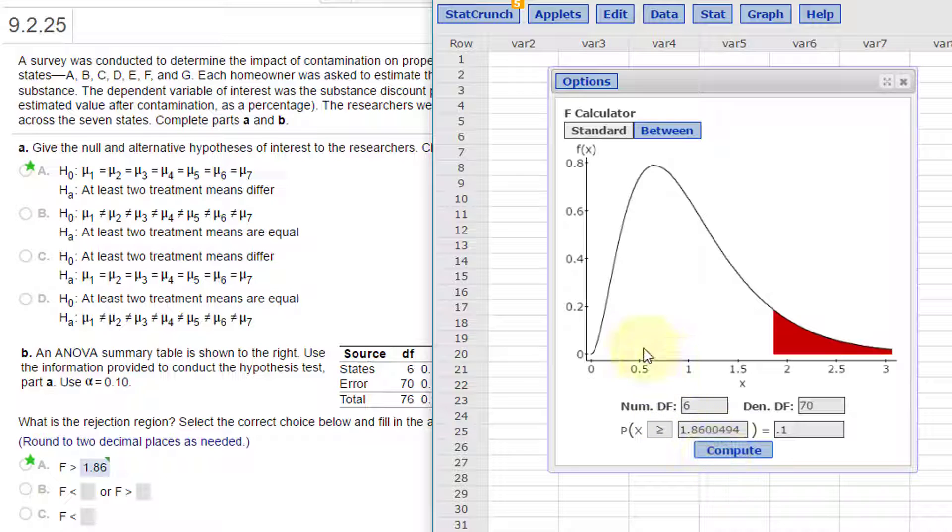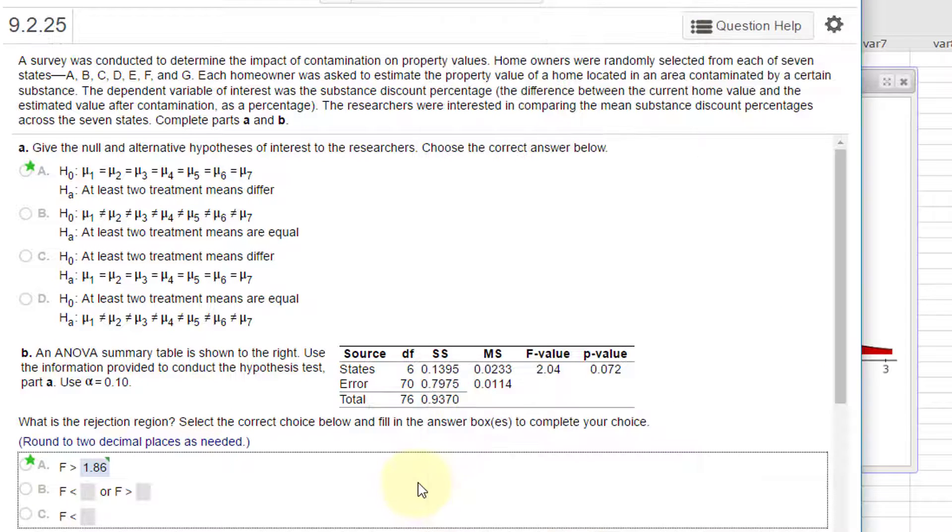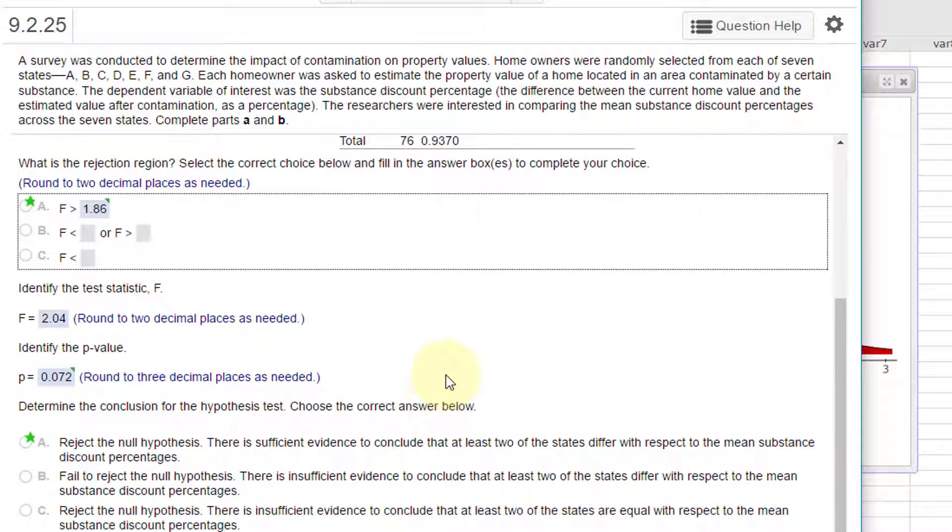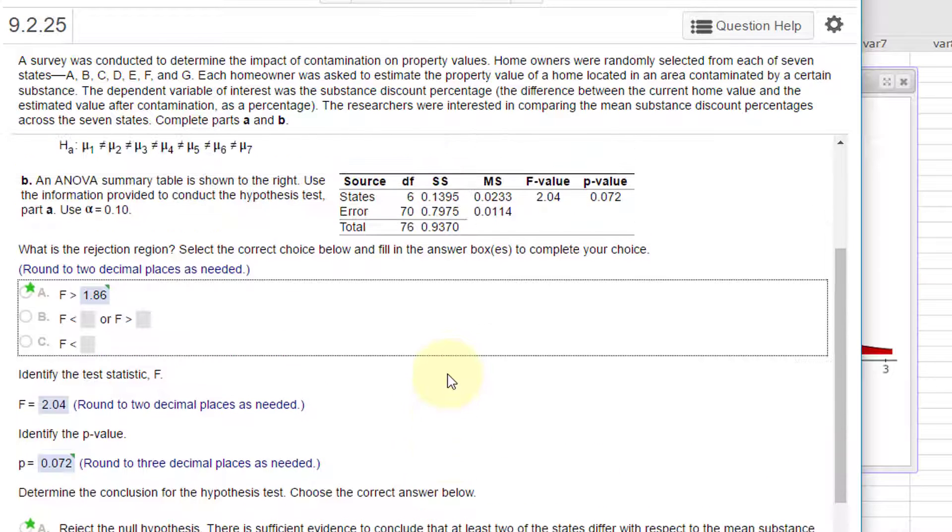Greater than 1.86 - so that's that part of the answer. Again, on this one they've already worked it for us. What's the F statistic? It's given right there: 2.04. That gives us the p-value of 0.072.